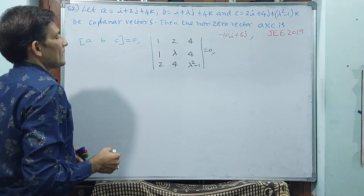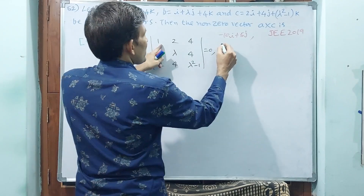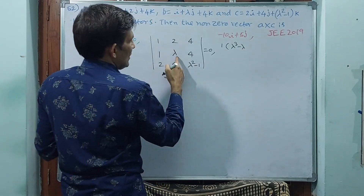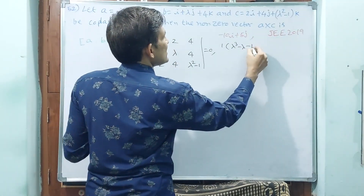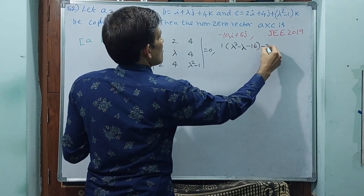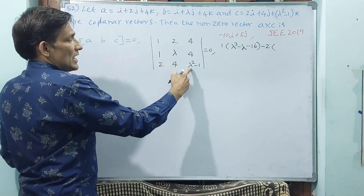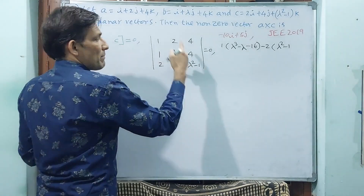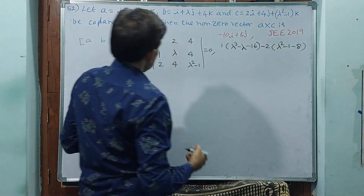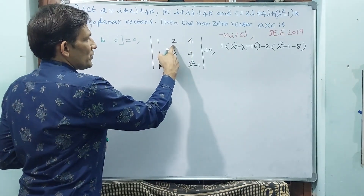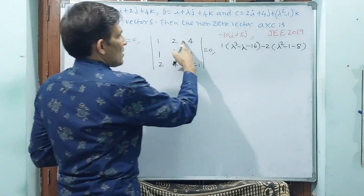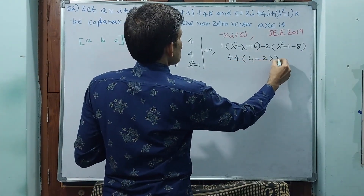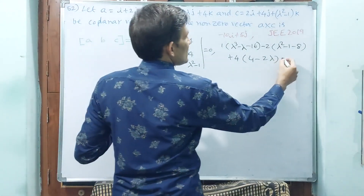Expanding: 1 into (lambda cubed minus lambda minus 16), minus 2 into (lambda squared minus 1 minus 8), plus 4 into (4 minus 2 lambda). This is equal to 0.